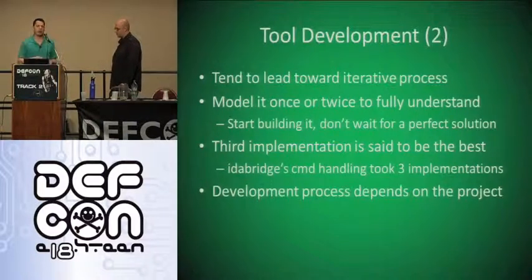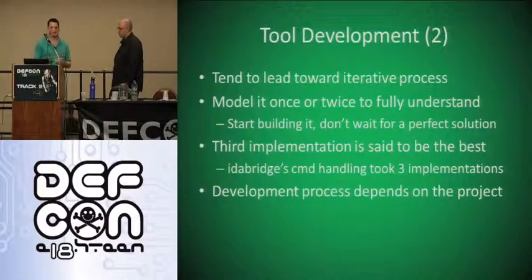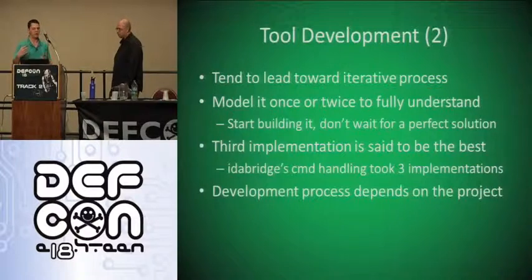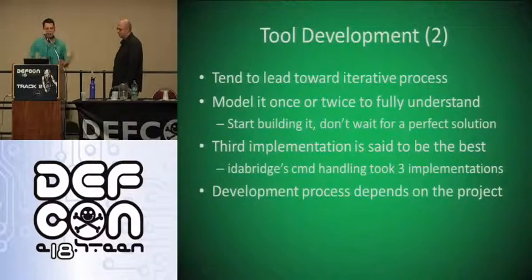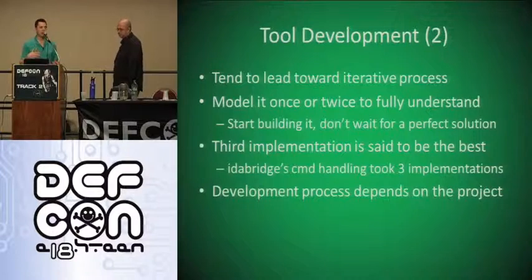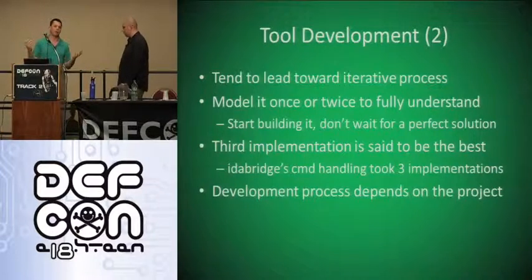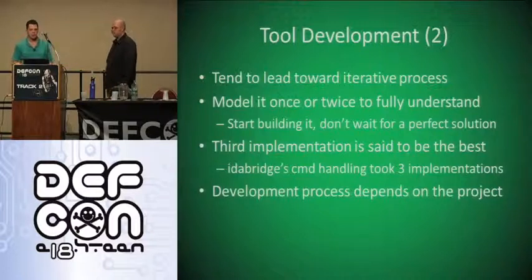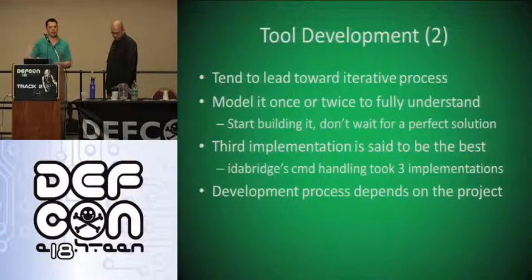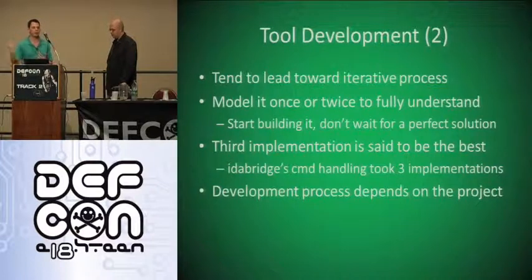We tend toward a more iterative process. We write a basic tool, get an idea of what went wrong and right, then iterate and create a new version with more functionality or features. The idea is to model it once or twice, get a grasp of what's going to happen, then start working on what might be a final product. You're never going to come up with the perfect solution the first time. Generally the third implementation is considered the best. In the case of IdaBridge, it took three times to get a working command line interface.